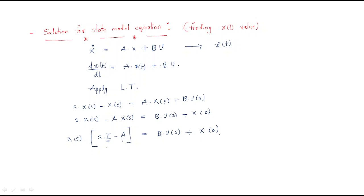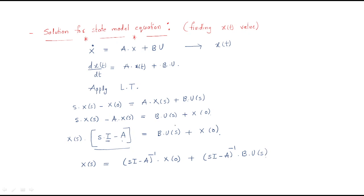Taking (sI - A) to the other side, X(s) is expressed as: (sI - A)^(-1)·x(0) — this is the first term — plus (sI - A)^(-1)·B·U(s) — this is the second term. So (sI - A) goes to the other side and becomes (sI - A) whole inverse multiplied with x(0), and similarly for the B·U(s) term.